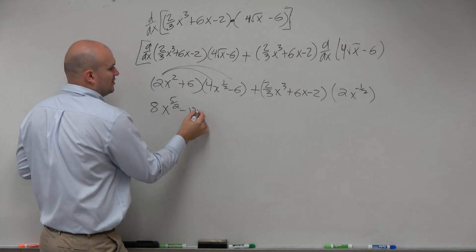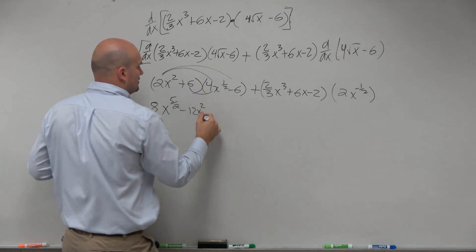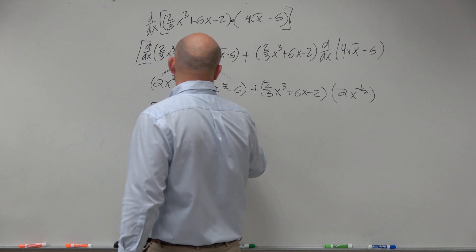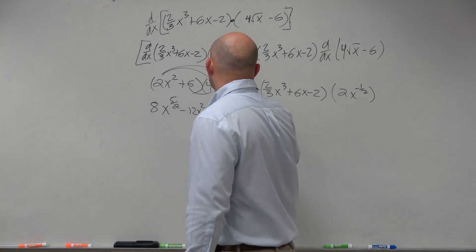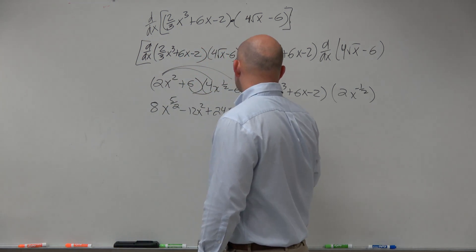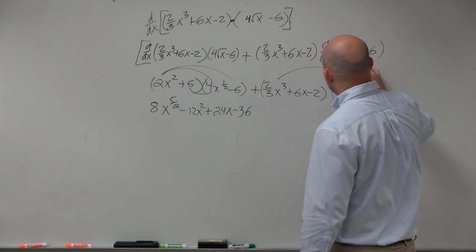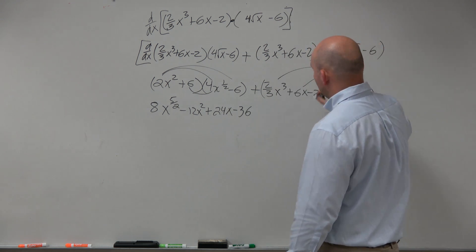Then this is going to be -12x² + 24x - 36, and then over here I'm just going to multiply this times each and every one of these terms.